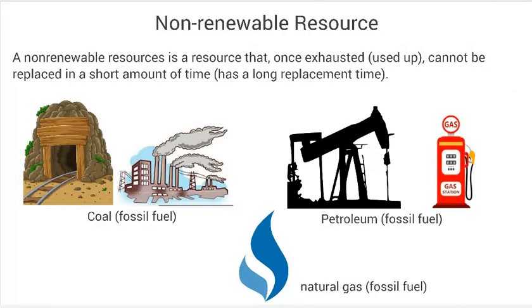The pressure and heat way down closer towards the earth — farther down — causes that organic matter to form into fossil fuels. There are three big types of fossil fuels: coal, petroleum, and natural gas.